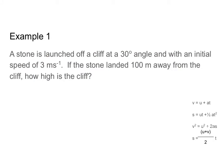Let's do an example. We have a stone that is launched off a cliff at a 30 degree angle with an initial speed of 3 meters per second. If the stone landed 100 meters away from the cliff, how high is the cliff? So here is our cliff and our stone is launched with an initial speed of 3 meters per second at an angle of 30 degrees from the horizontal. The stone goes up before coming down and landing 100 meters from the base of the cliff, and our goal is to find the height.